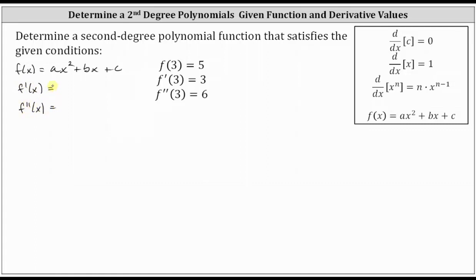To determine f prime of x, we differentiate ax squared plus bx plus c with respect to x, treating a, b, and c as constants. The derivative of ax squared is two ax, plus the derivative of bx, which is b, plus the derivative of c, which is zero because c is a constant.